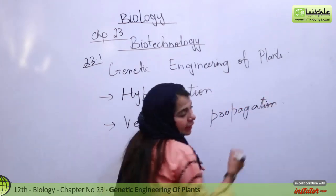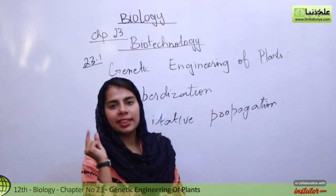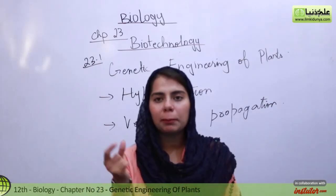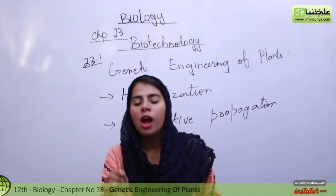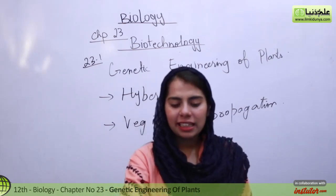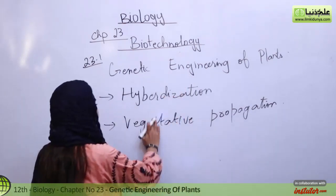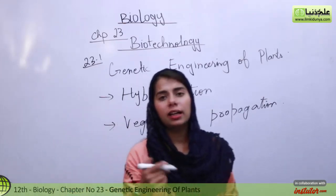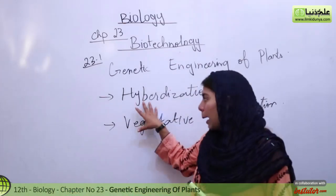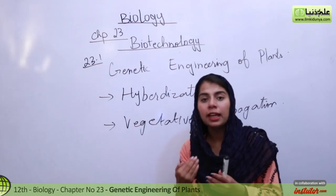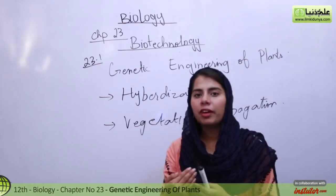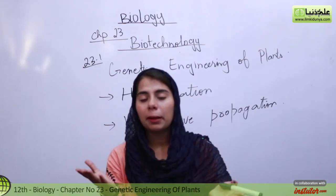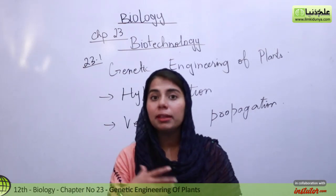Tissue culture is a technique in which you use a single piece of a plant — it could be from a leaf, a stem, or a root. From a single cell you develop a whole complete plant, and you get new varieties. When you propagate those new varieties, you can achieve millions of copies.